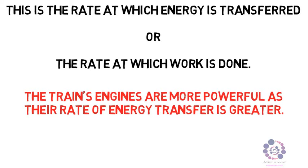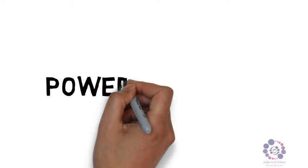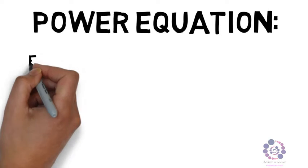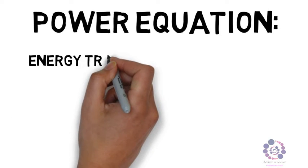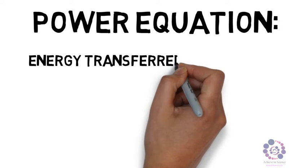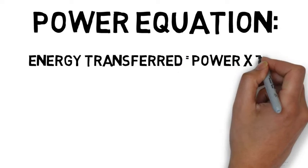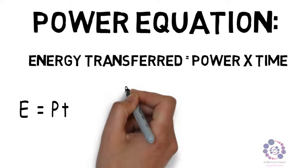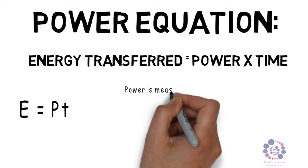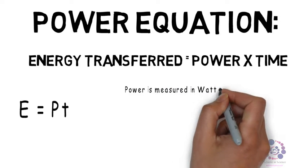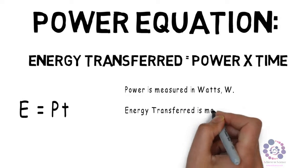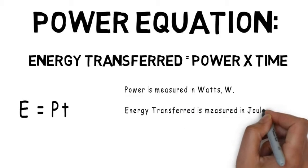There is of course an equation that links with power. Energy transferred equals power multiplied by time. Like with other equations we can simplify this to its symbol. Therefore E equals PT where power is measured in watts, energy transferred is measured in joules, and time is measured in seconds.